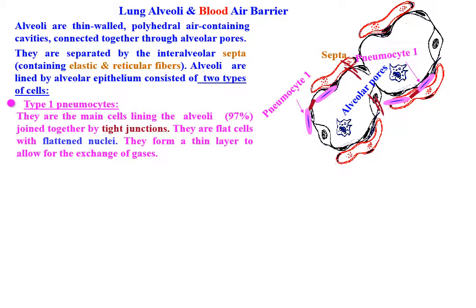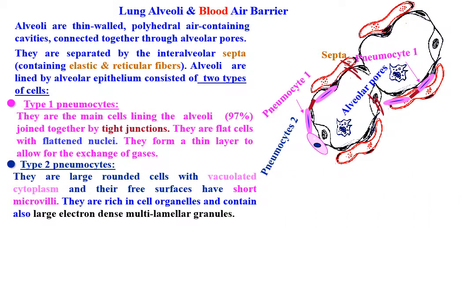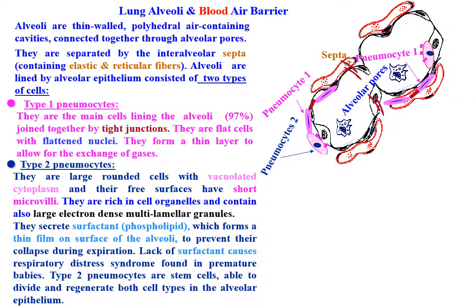Type 1 pneumocytes form a thin layer to allow for the exchange of gases. Type 2 pneumocytes are large, rounded cells with vacuolated cytoplasm, and their free surface has short microvilli. They are rich in cell organelles and contain large electron-dense multilamellar granules. They secrete surfactant, a phospholipid, which forms a thin film on the surface of the alveoli to prevent their collapse during expiration. Lack of surfactant causes respiratory distress syndrome, found in premature babies.